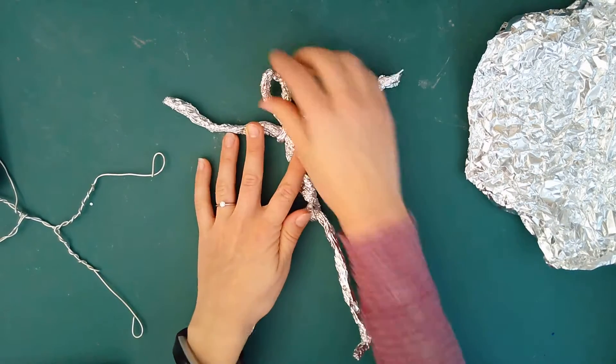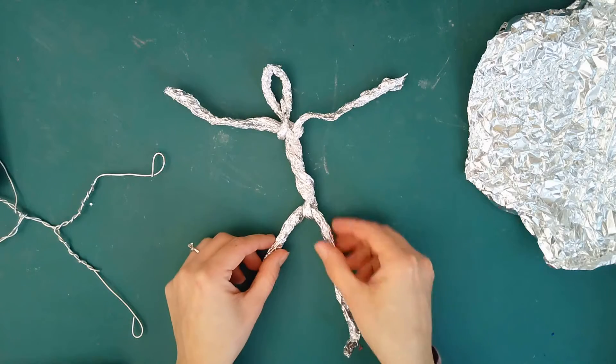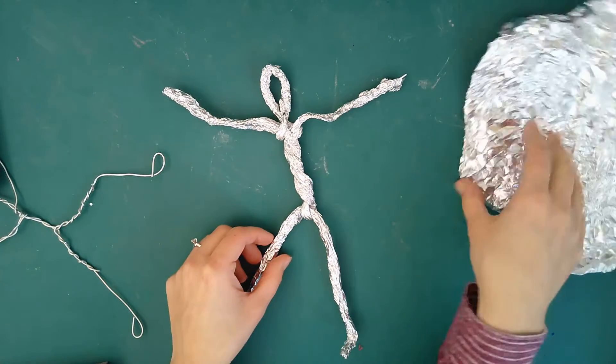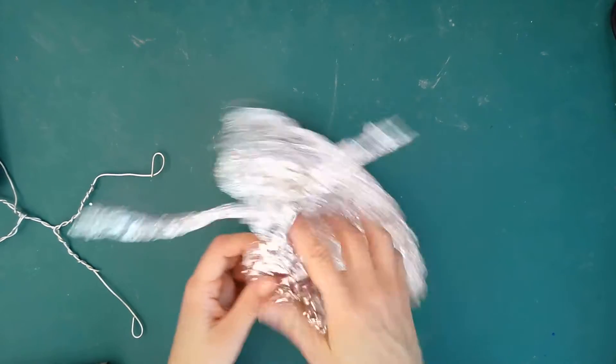And what this foil represents is giving the legs and body and arms more dimension. So you can just kind of take it and more thoroughly wrap it around.